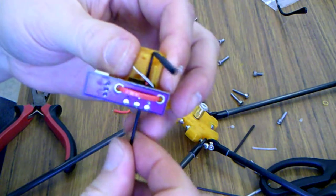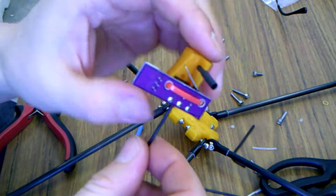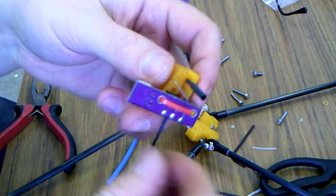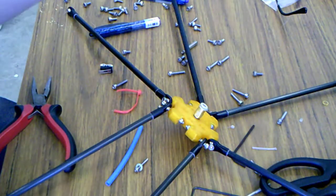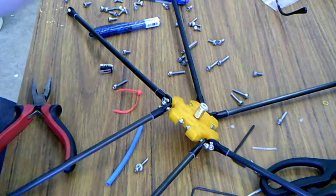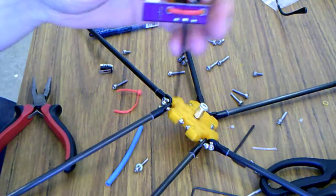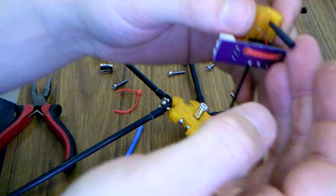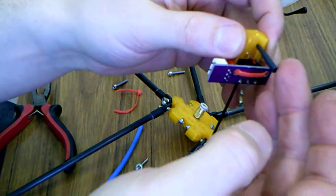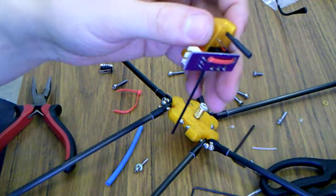And the reason you want that really stiff heat shrink tubing is because when it comes up to retract it sweeps the side and it's supposed to catch on this. So that's why you need that.